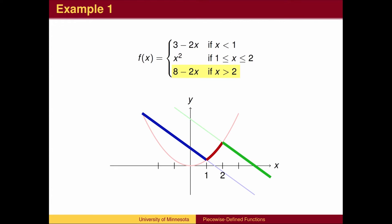To the right of 2, the function is defined by the line y equals 8 minus 2x. We then combine the three pieces to get the entire function.